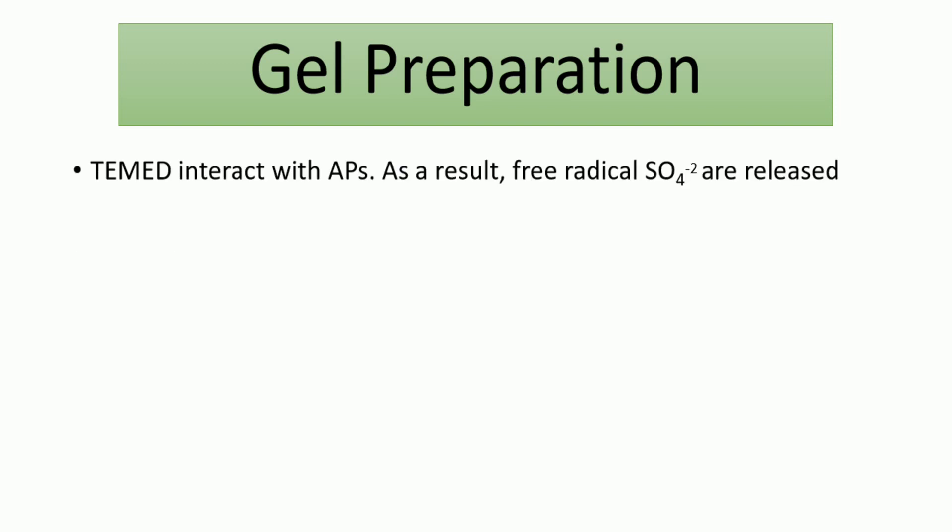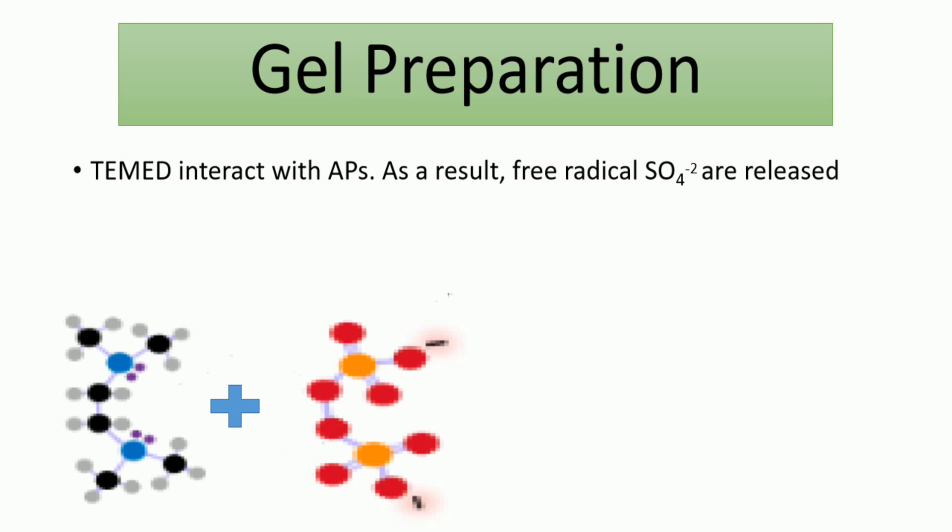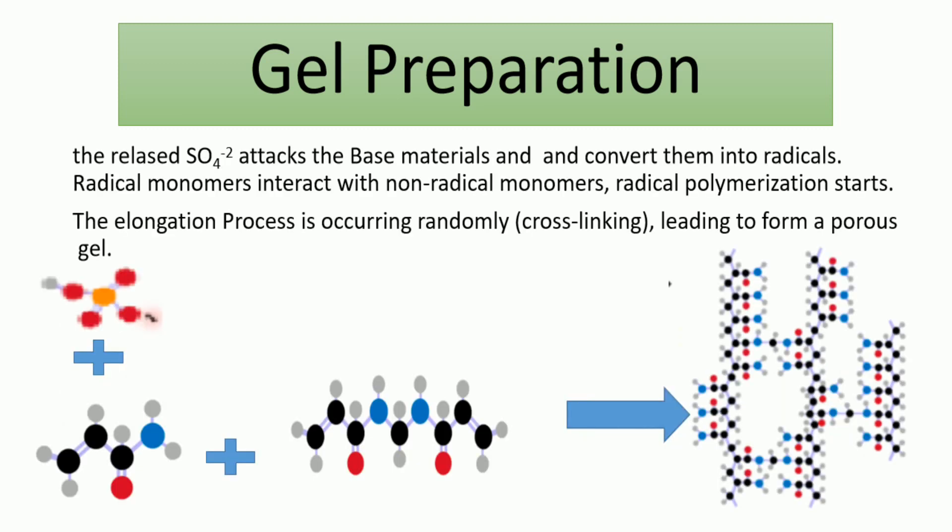How is this gel prepared? TEMED interacts with APS, and as a result, two free SO4 molecules are released. These represent free radicals. Those free radicals can interact with base material molecules, mainly acrylamide and bisacrylamide, and hence the process of radical polymerization is initiated. Once acrylamide interacts with bisacrylamide, elongation starts randomly, which provides the cross-linking or the porous sieving gel. This is the same process for formation of both stacking gel and resolving gel.